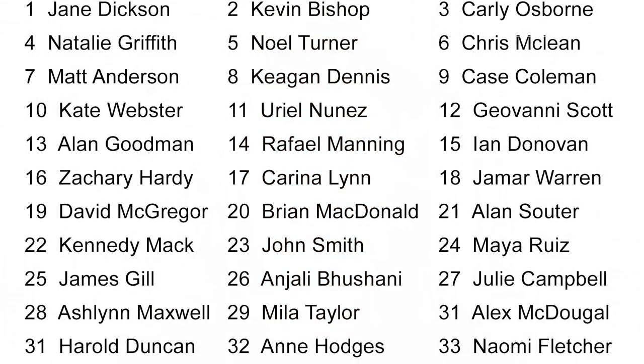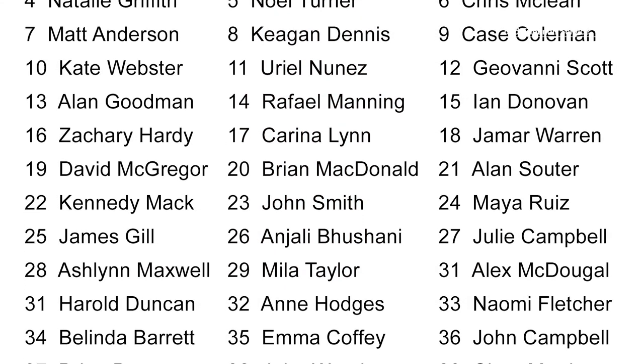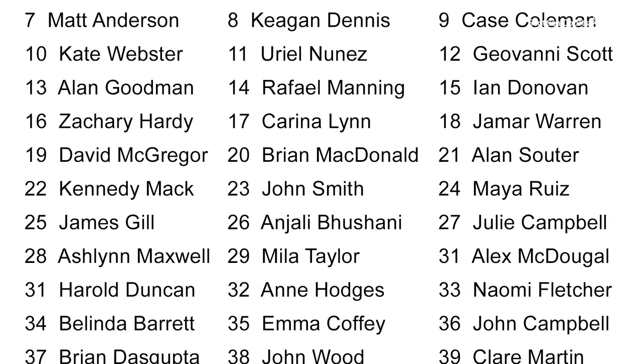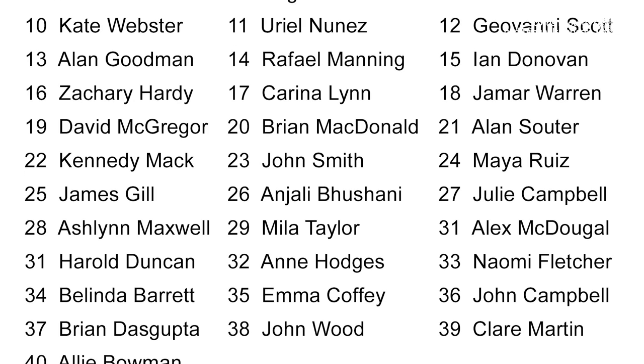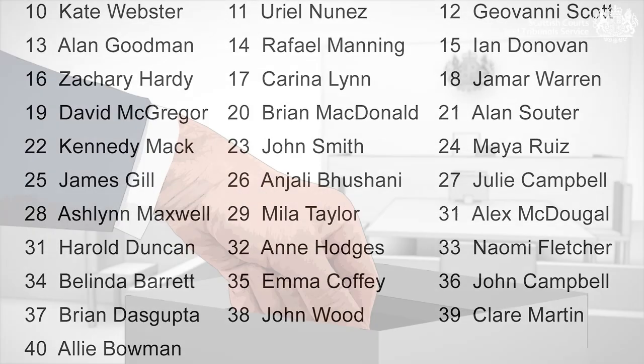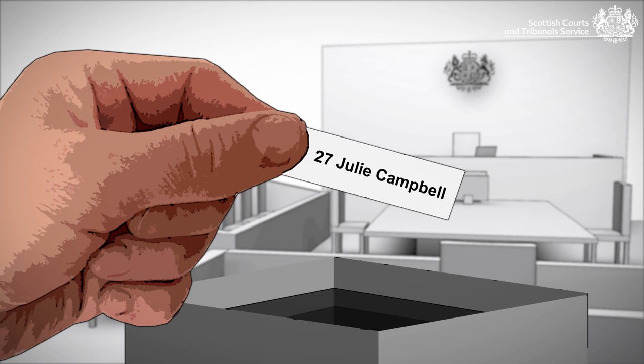Every trial starts with a selection of the jury from the pool of potential jurors. After the case is called, the clerk will take out 15 slips at random from a bowl and call out the name and number on each slip. If your name is called, you should make your way to the jury box at the front of the court and take a seat.